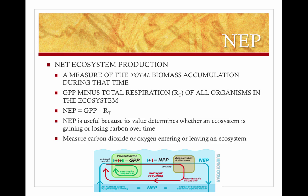Net ecosystem production, or NEP, is a measure of the total biomass accumulation during that time. It's the GPP minus the total respiration (RT) of all organisms in the system, including decomposers and other heterotrophs — so NEP = GPP − RT. NEP is useful because its value determines whether an ecosystem is gaining or losing carbon over time, and CO₂ or oxygen entering or leaving an ecosystem is measured to estimate NEP.